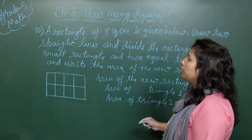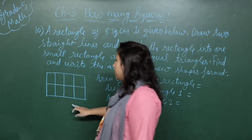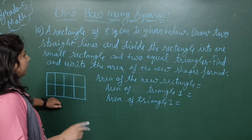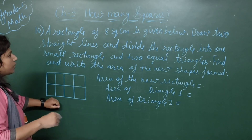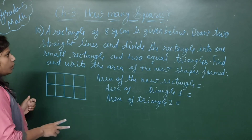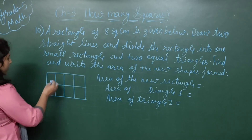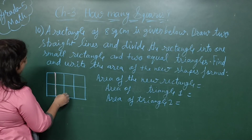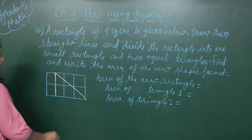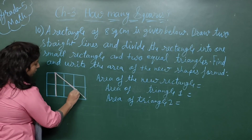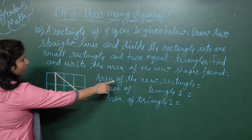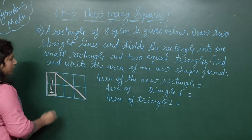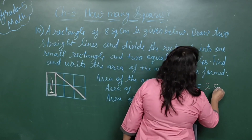Now see question number 10 from the workbook. A rectangle of 8 square centimeters is given. Draw 2 straight lines to divide the rectangle into 1 small rectangle and 2 equal triangles. I am drawing this picture with lines. This gives 1 small rectangle, and then distributes as 2 triangles. The area of the new rectangle will be 2 square centimeters.